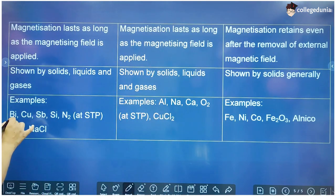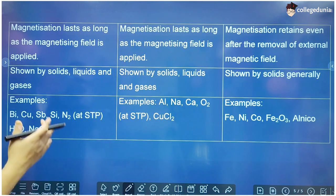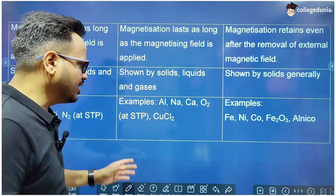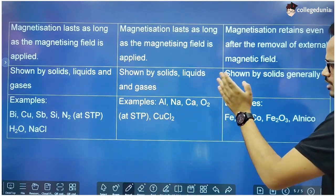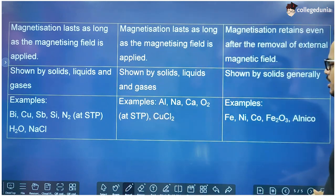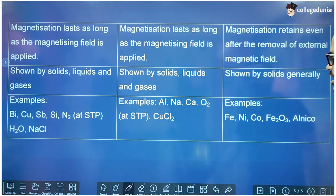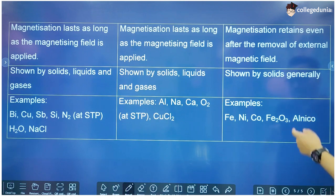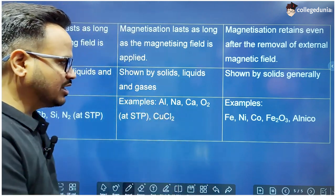Examples of diamagnetic substances: bismuth, copper, antimony, silicon, nitrogen at STP, water, and NaCl. Examples of paramagnetic substances: aluminum, sodium, calcium, oxygen, and copper chloride. Examples of ferromagnetic substances: iron, nickel, cobalt, Fe₂O₃ (ferric oxide), and Alnico — an alloy of aluminum, nickel, and cobalt. These ferromagnetic examples are all solids.